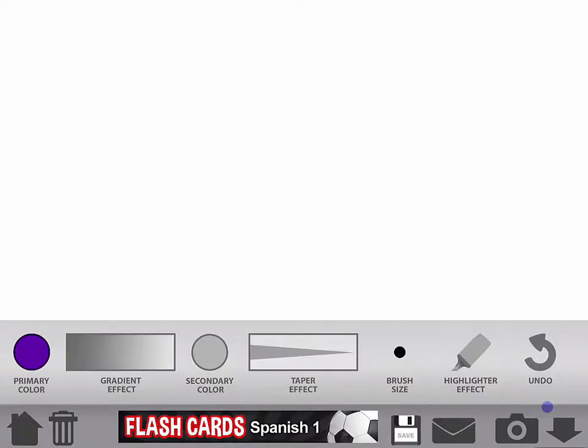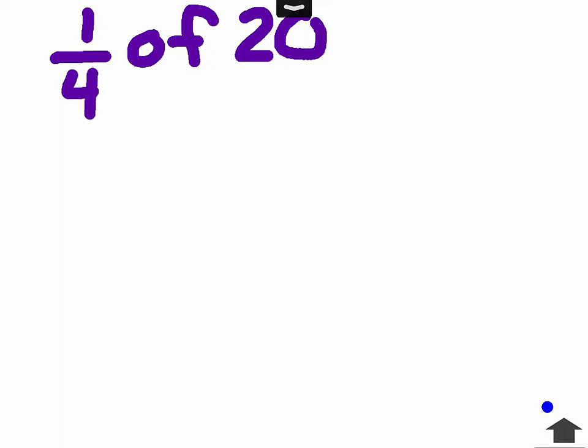Now let's talk about how to find a fraction of a whole number. So if I'm trying to find one-fourth of twenty, this is going to be a multiplication problem. Anytime you see the word 'of', it's going to mean to multiply. So I'm going to go ahead and insert my multiplication where that 'of' is at.